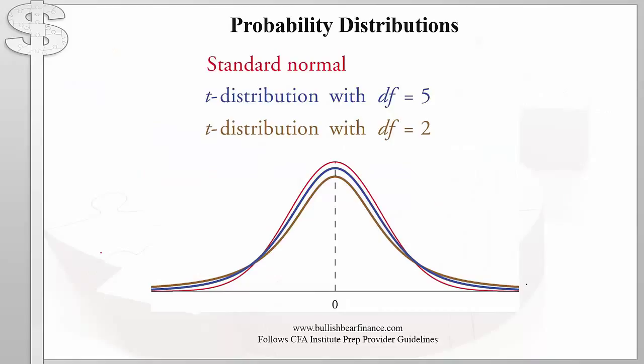I am assuming that you know the differences between the standard normal distribution, which is used to compute the z statistic, and the Student's t distribution, used to compute the t statistic. But just to quickly recap, let's look at the differences. The red curve represents the standard normal distribution, the blue curve represents the t distribution with 5 degrees of freedom, and the golden curve represents the t distribution with 2 degrees of freedom.